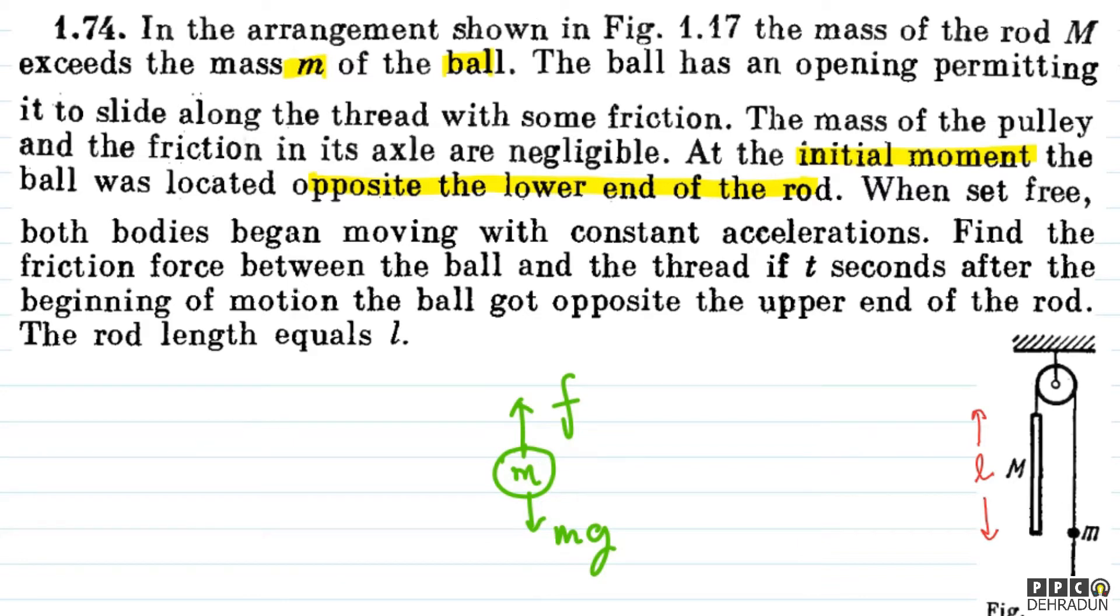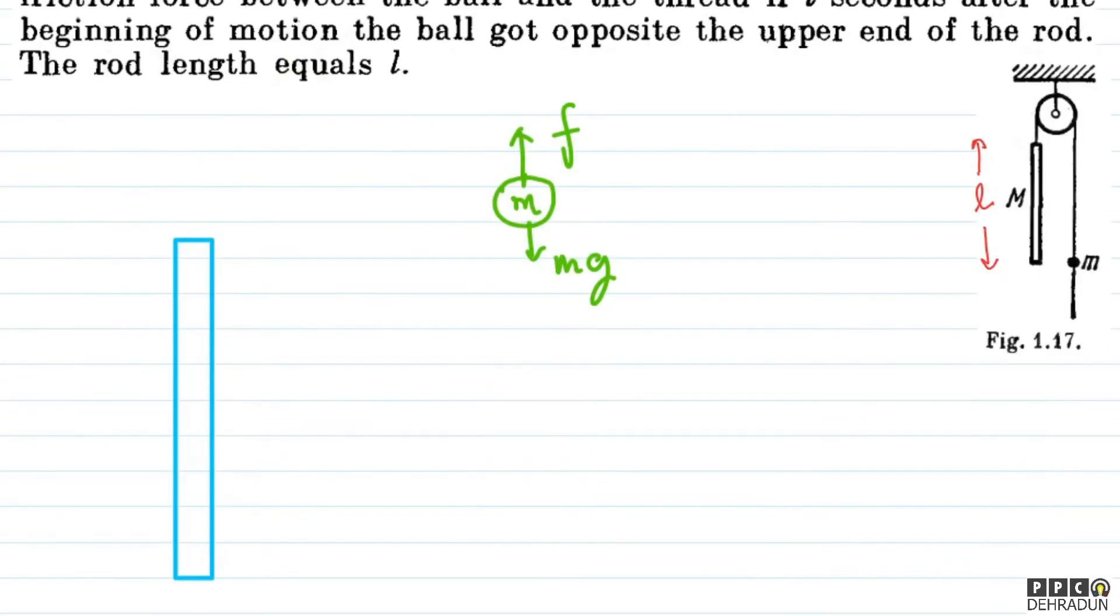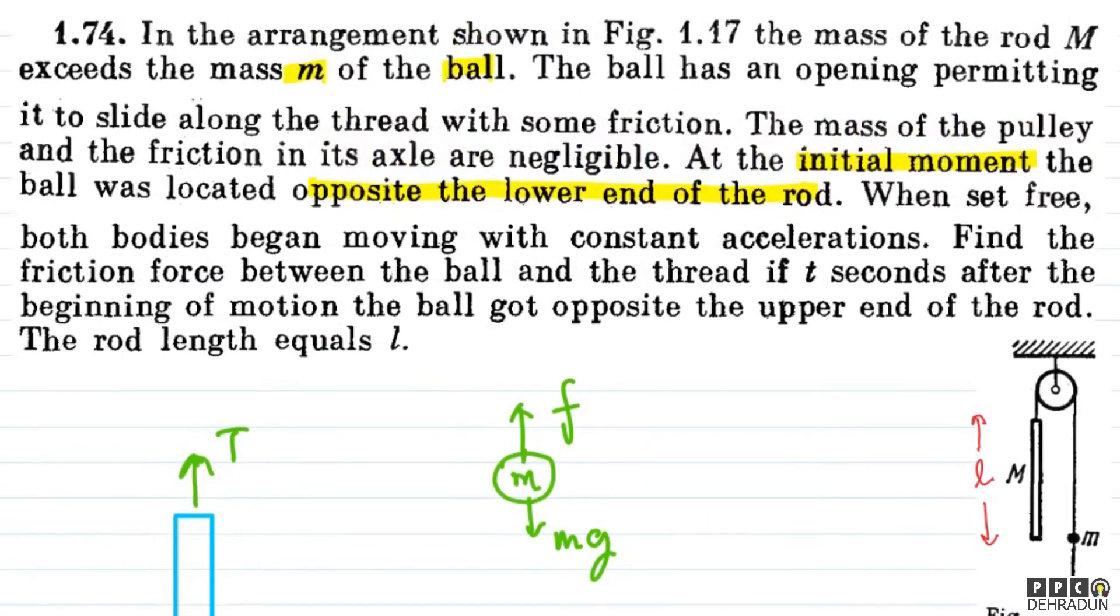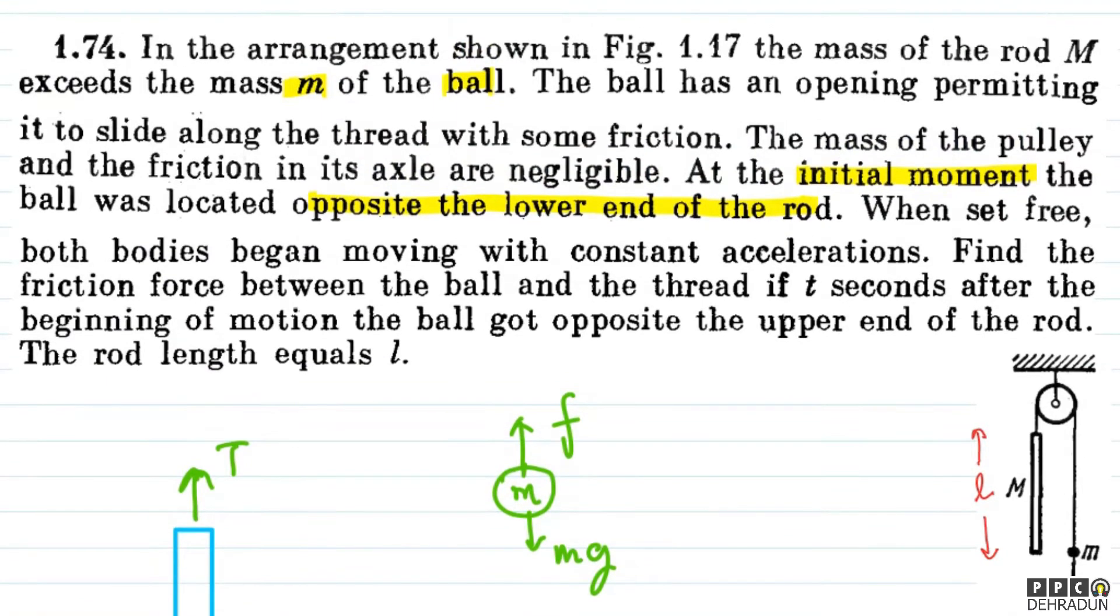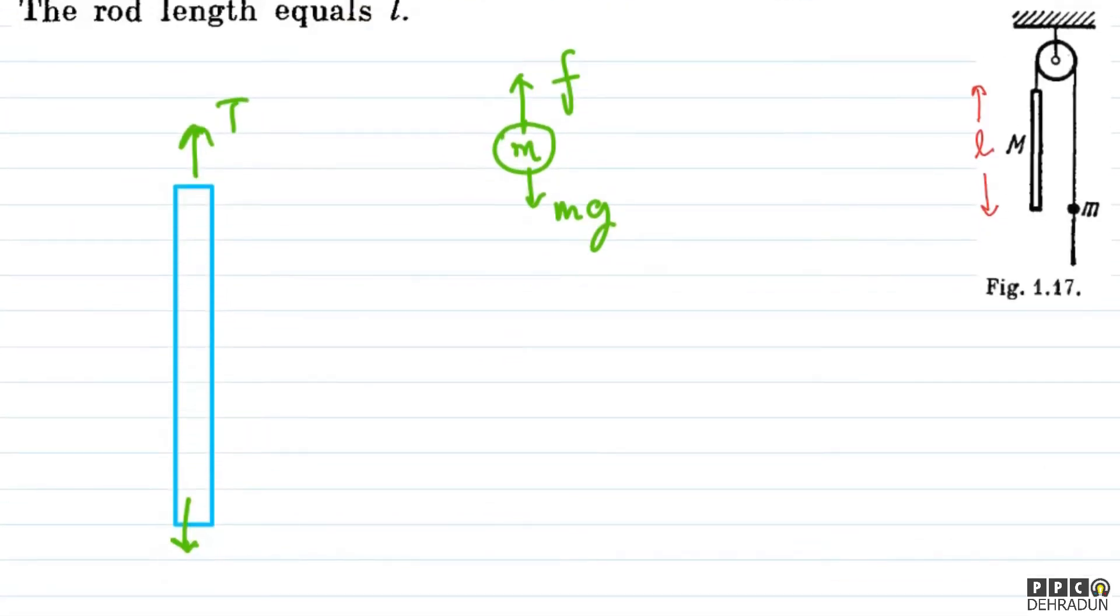Besides this, if I talk about this rod, then if we talk about the rod, we can easily see what forces will act on it. So see, on the rod there's a force acting upward - tension, and a force acting downward - its weight. Its mass, see, we were given capital M. So in the free body diagram we will show downward Mg.